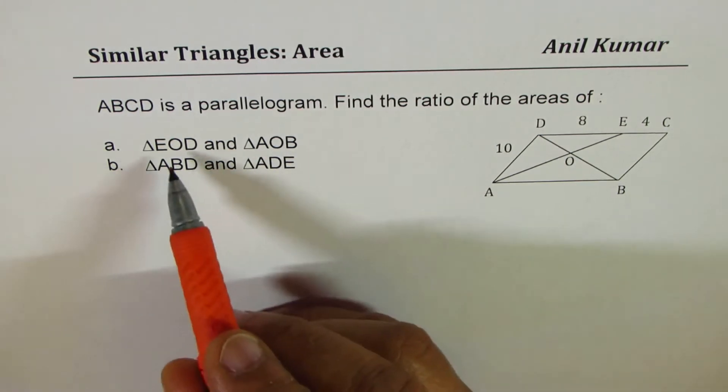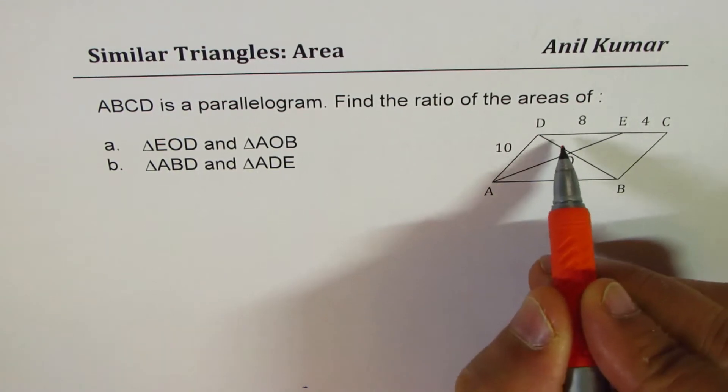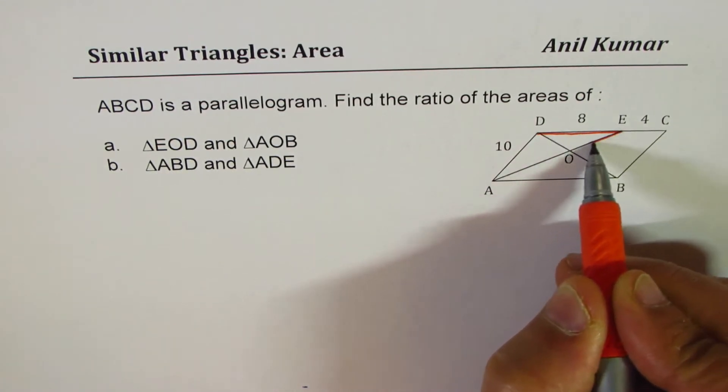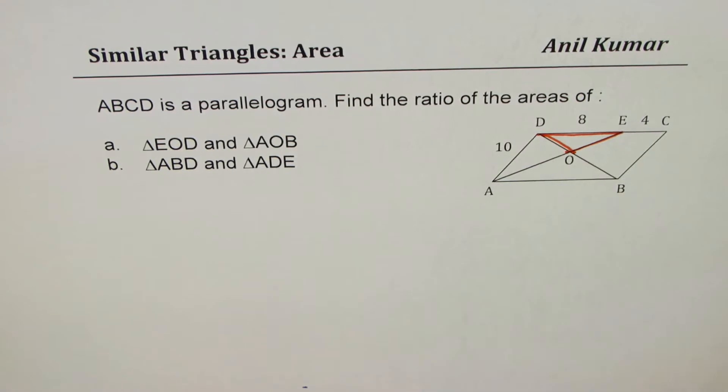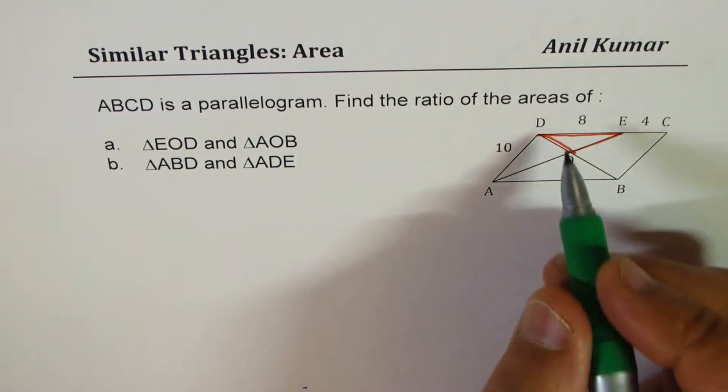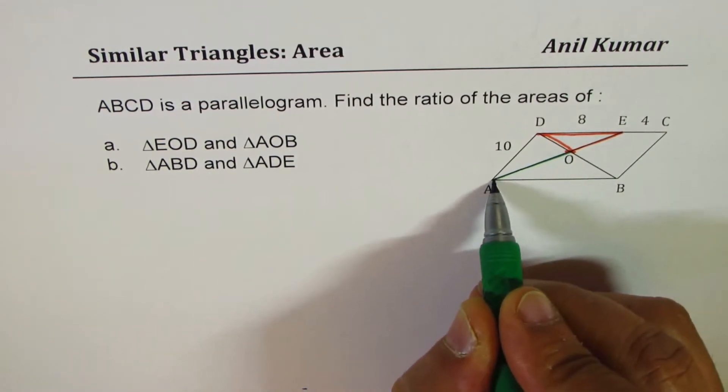Let's look into these triangles EOD, that means this triangle here, to the ratio of AOB. So AOB, so these two triangles, that is first part.